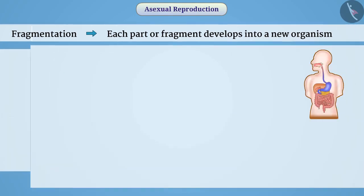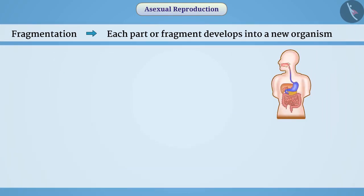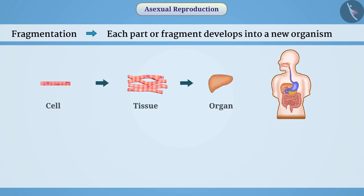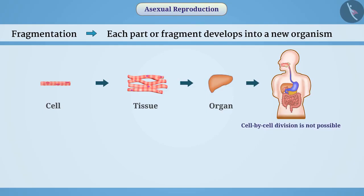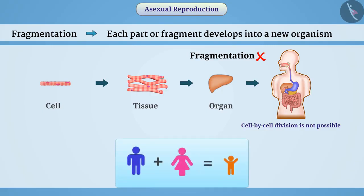The body structures of other multicellular organisms are complex. In such cases, there is formation of tissue from cells, and formation of organs from tissues. The location of organs is fixed in the body, due to which cell-by-cell division of these organisms is not possible. Therefore, fragmentation is not seen in such organisms — instead, we see a more complex process of reproduction.